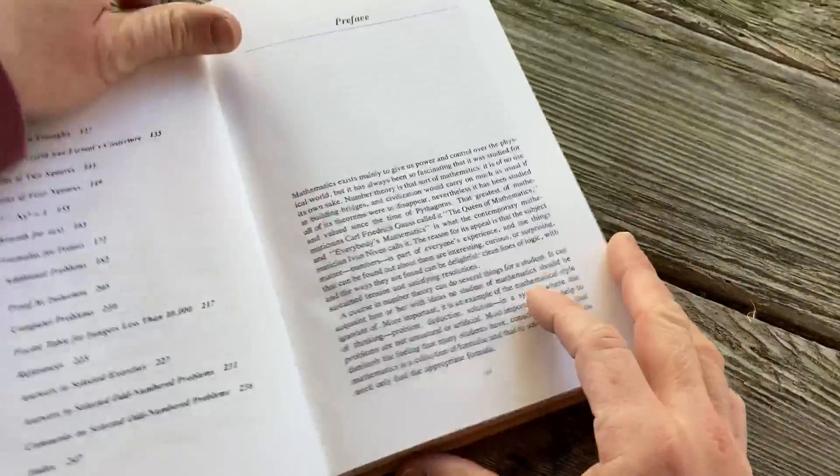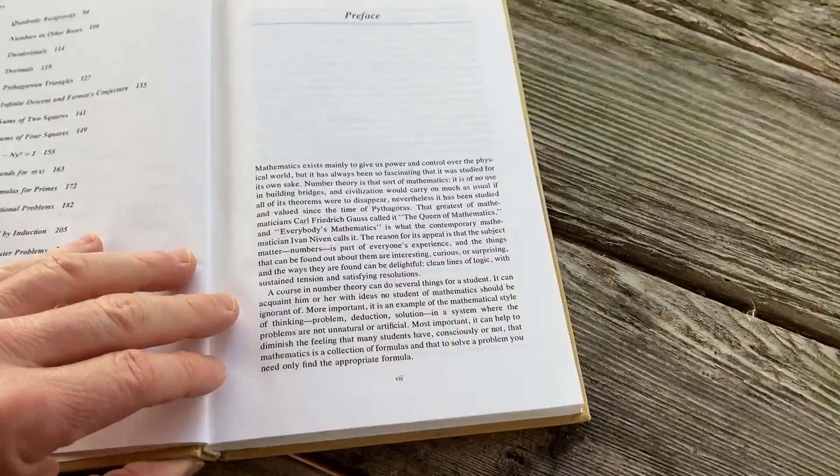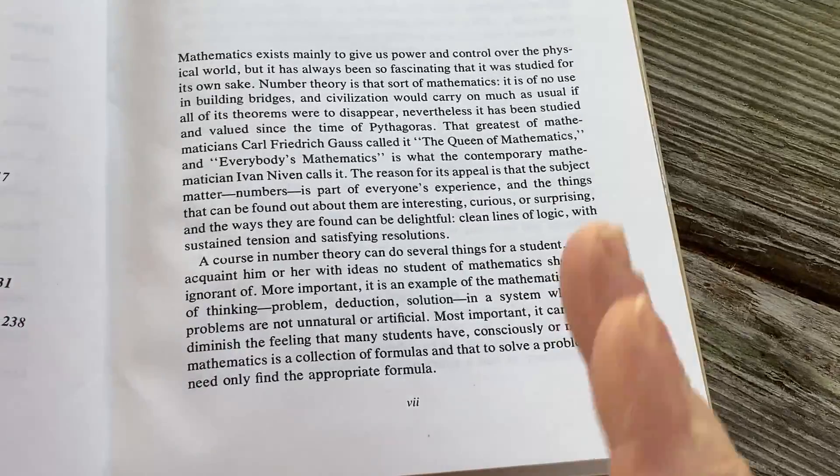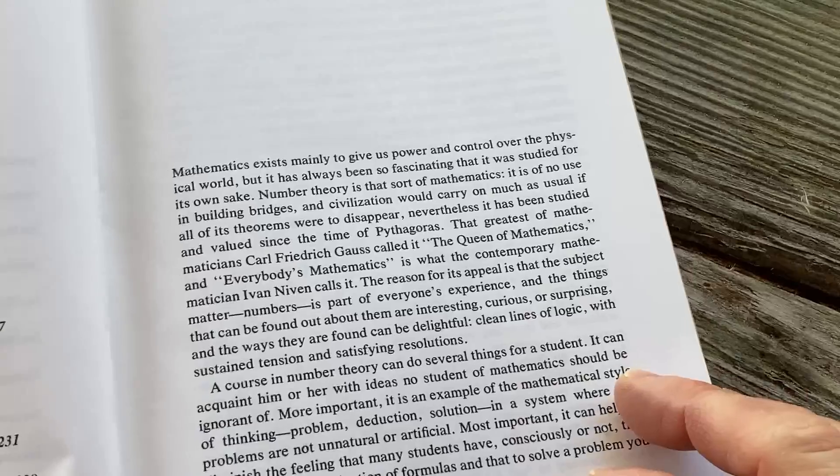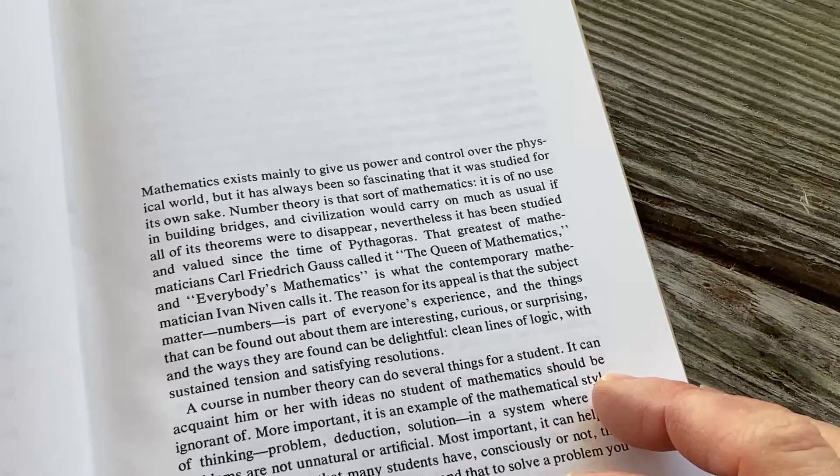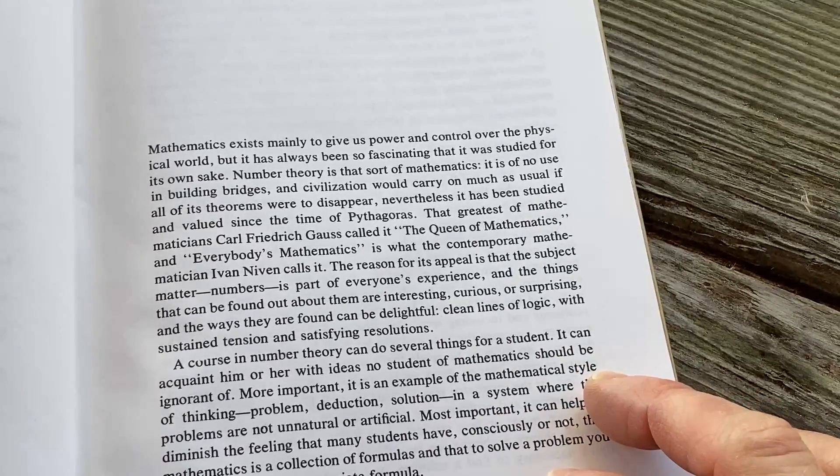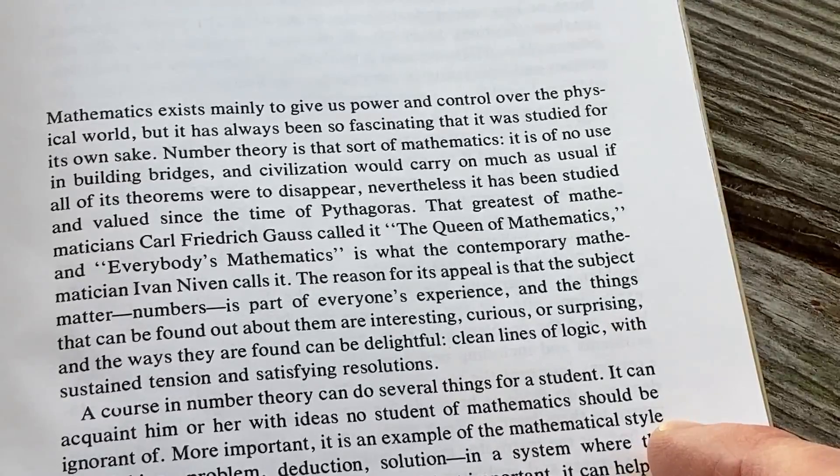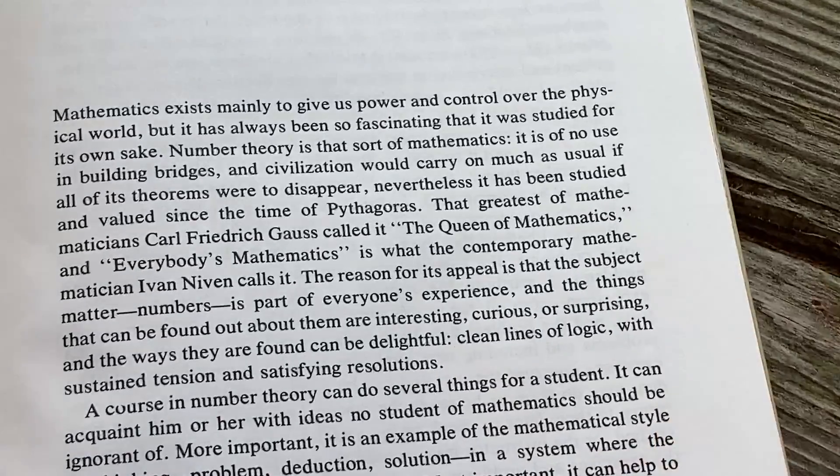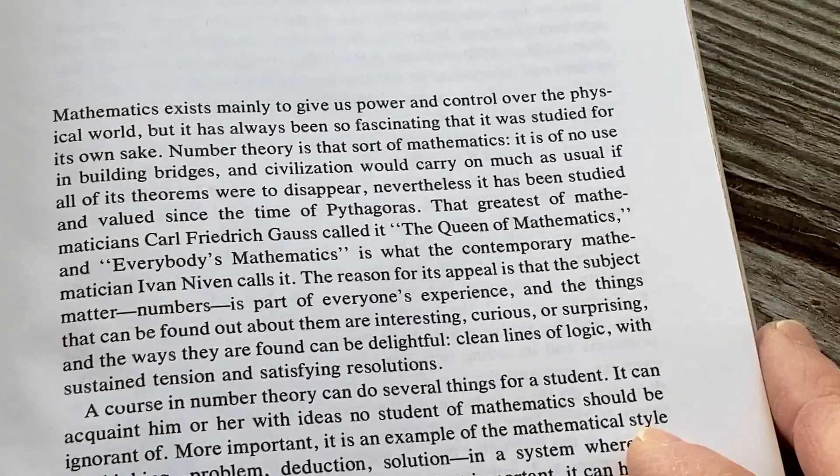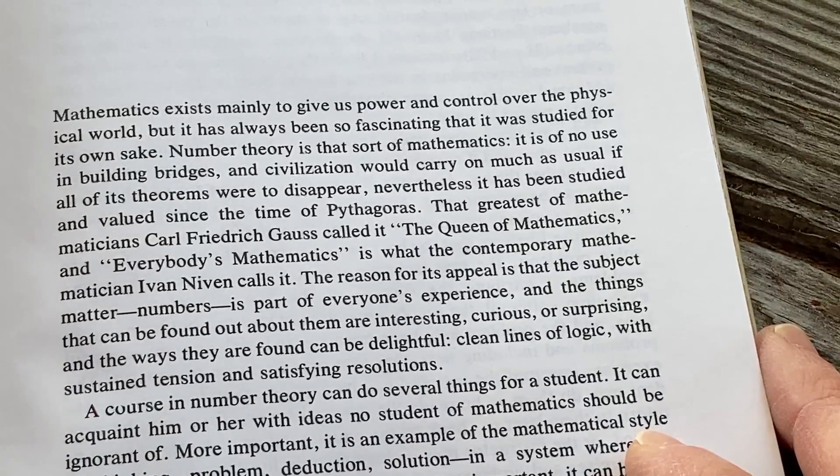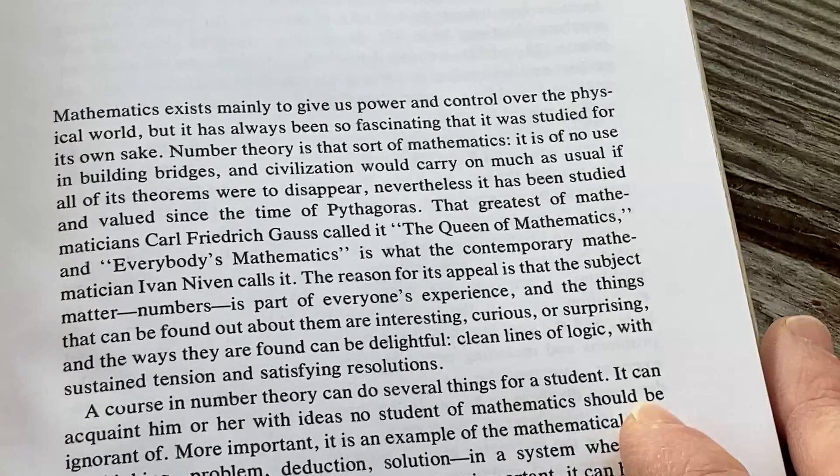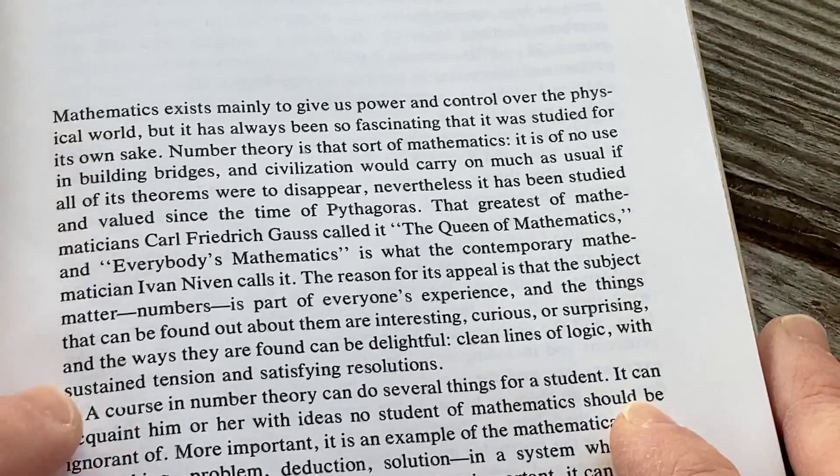Let's jump to the beginning of the book so you see how it reads. You'll find that number theory books are very gentle usually at the beginning, but they get progressively harder pretty quickly. Mathematics exists mainly to give us power and control over the physical world, but it has always been so fascinating that it was studied for its own sake. Mathematics for the sake of mathematics. That is the reason I studied math. Because I liked it. I didn't study for any applications.